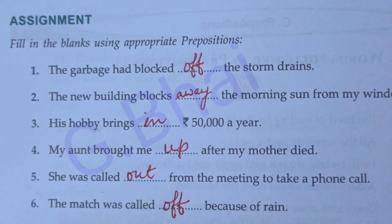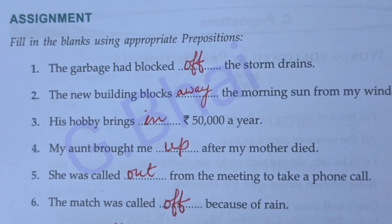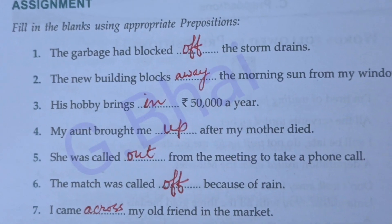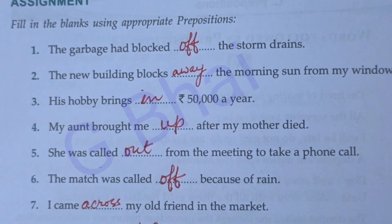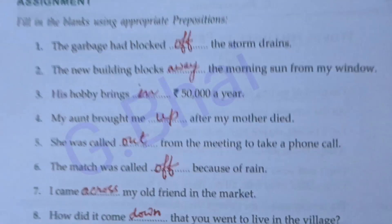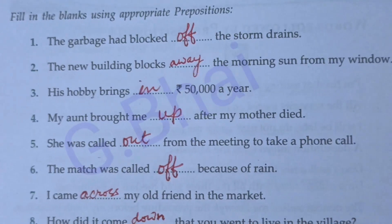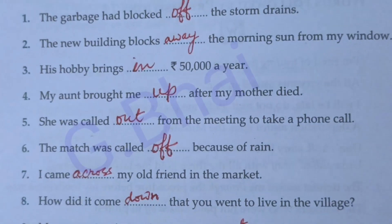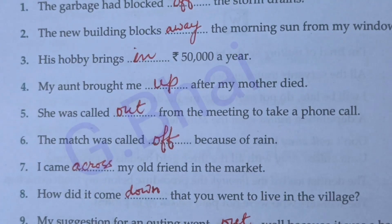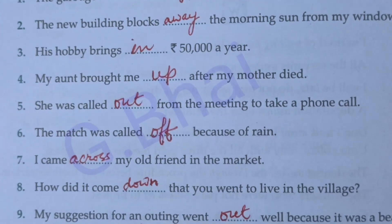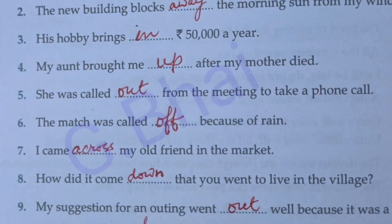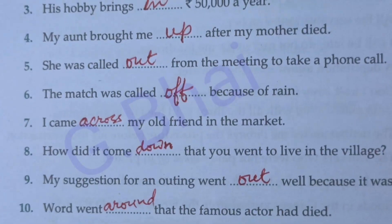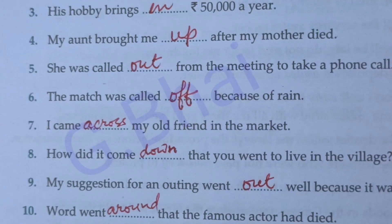Next, fill in the blanks using appropriate prepositions. Number one: The garbage had blocked off the storm drains. Number two: The new building blocks away the morning sun. Number three: His hobby brings in 50,000 a year. Number four: My aunt brought me up after my mother died. Number five: She was called out from the meeting to take a phone call.